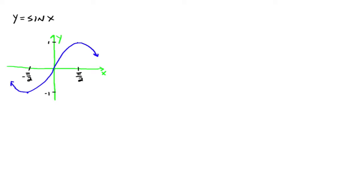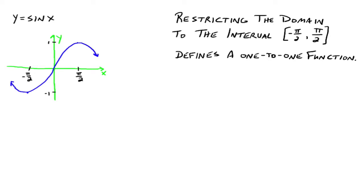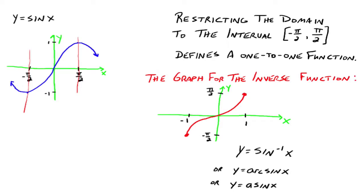What we're going to do is restrict the domain on this graph to the interval negative pi over 2 to pi over 2. We're going to chop it off there and there, and only look at the stuff in the middle. When we do that, we definitely have a one-to-one function. The graph of the inverse function would look like this.